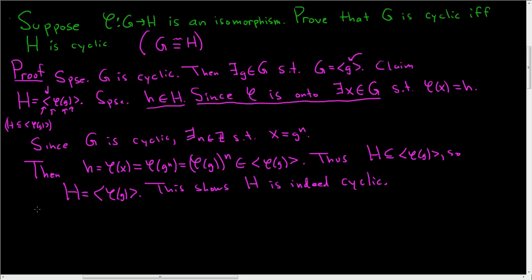Let's prove the other direction. So suppose H is cyclic with, let's say, generator h, little h. So we can write H as the cyclic group generated by little h. And the claim here is that G is cyclic. So claim G is cyclic.